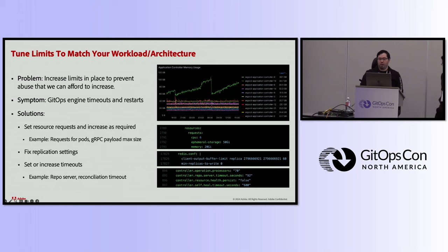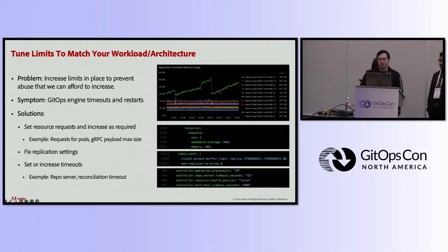Another thing we did was fix replication settings. Argo CD uses Redis as the caching engine, and some settings there need to be tuned to ensure Redis works properly with larger database sizes. We increased the client output buffer limit and the min replica as-the-right setting. We also set or increased timeouts as required — for our repo server we set timeouts there, and increased reconciliation timeouts if you happen to be hitting those.